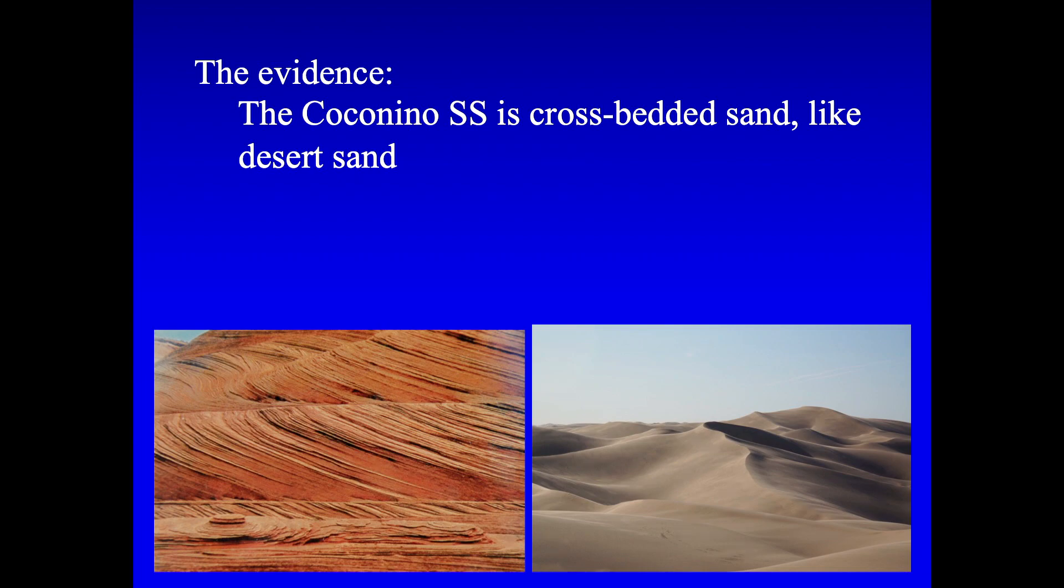You have the desert, the dune, the wind will blow and carry sand over the top of the dune and deposit sloping layers on one side. And here we have the same kind of sloping layers in this sandstone. We call it crossbedded sandstone. And so it does have that feature.